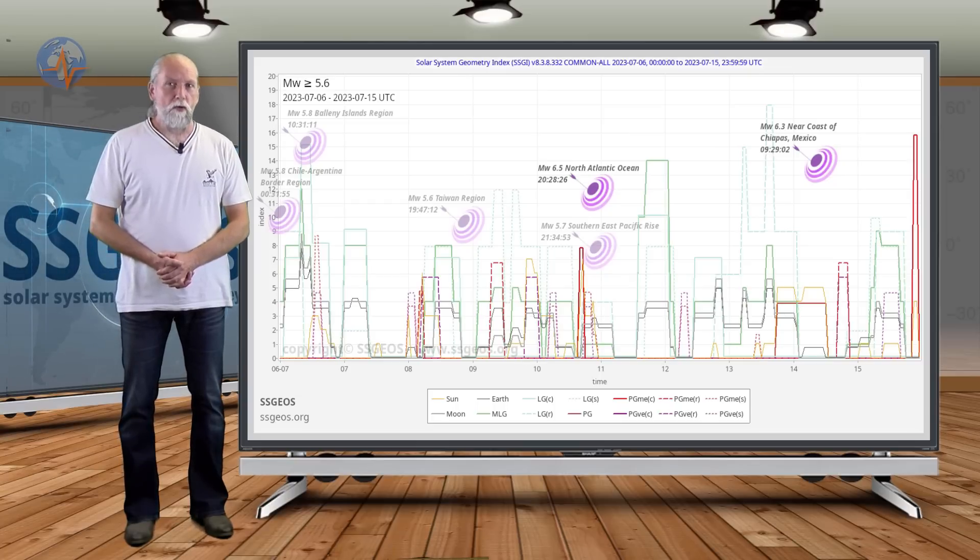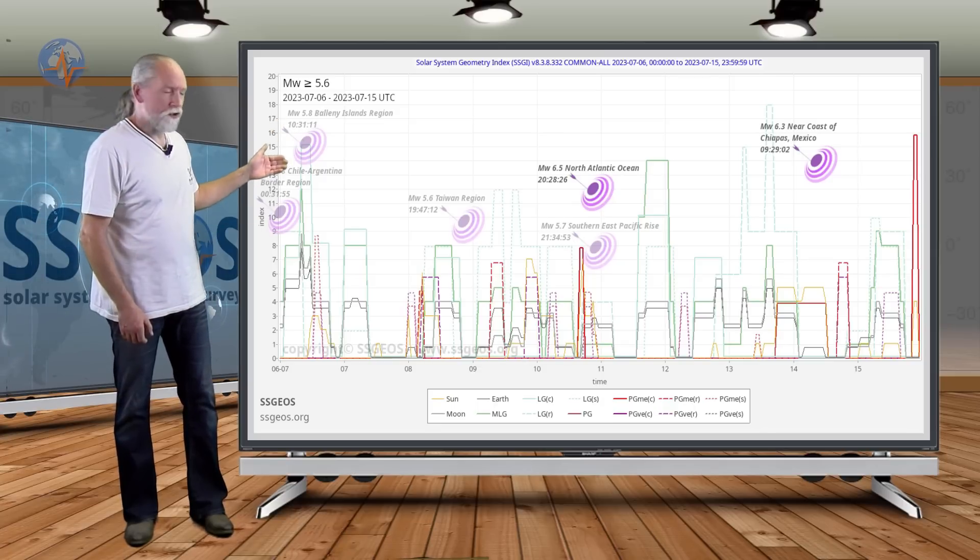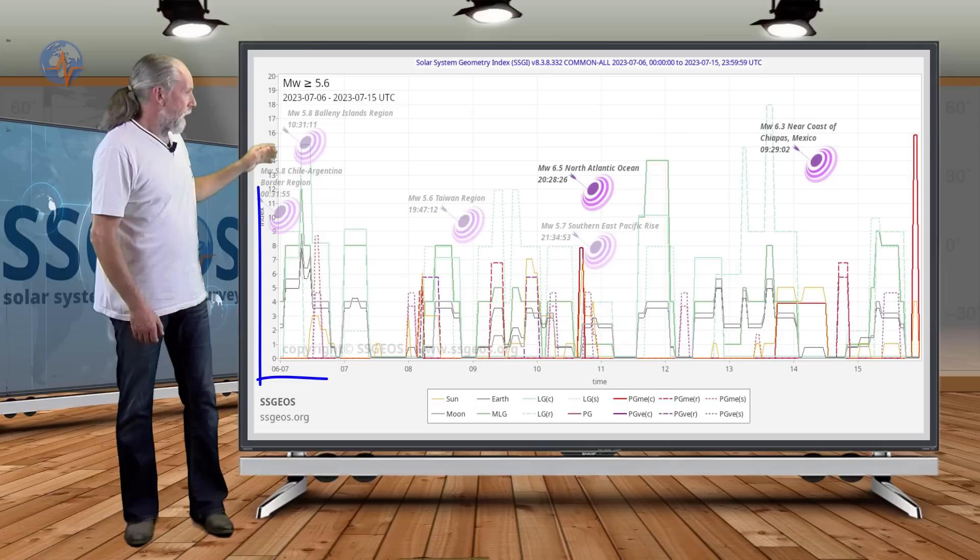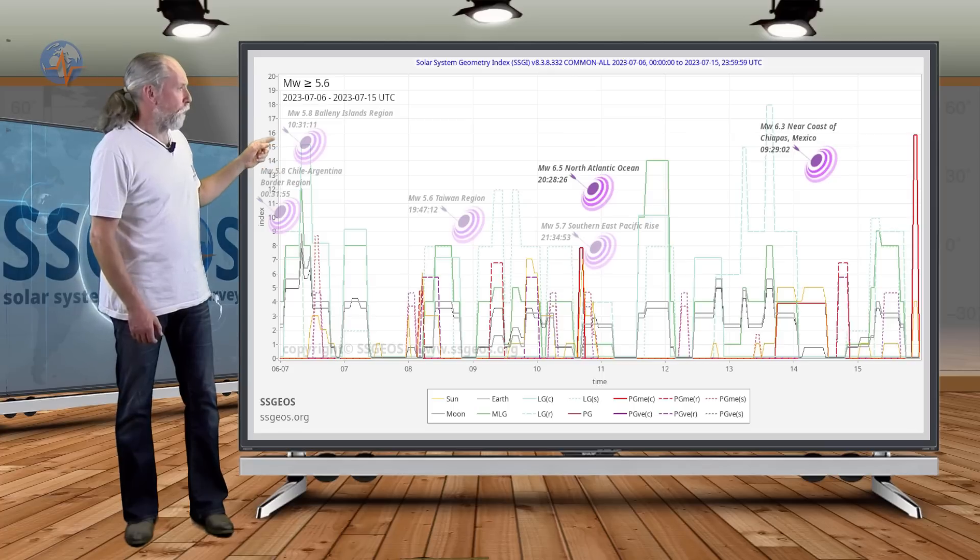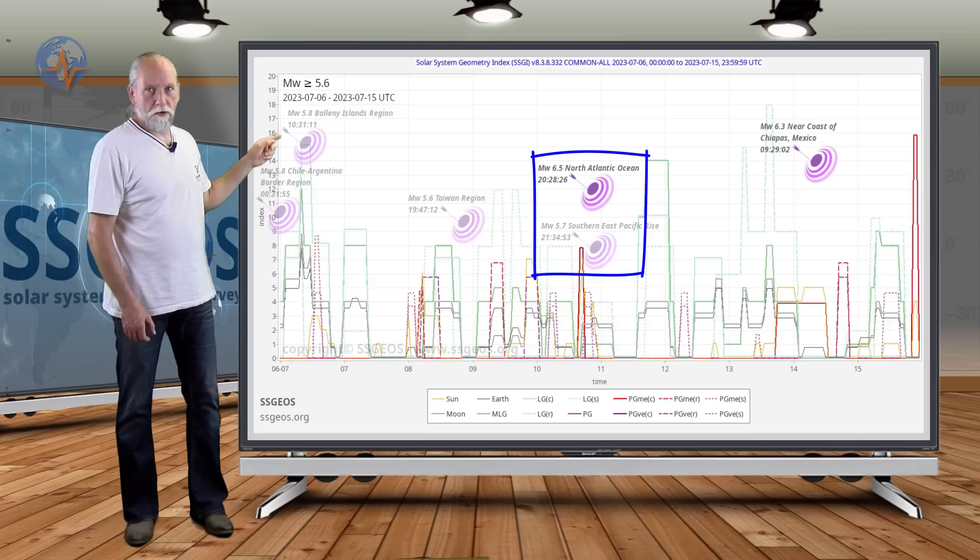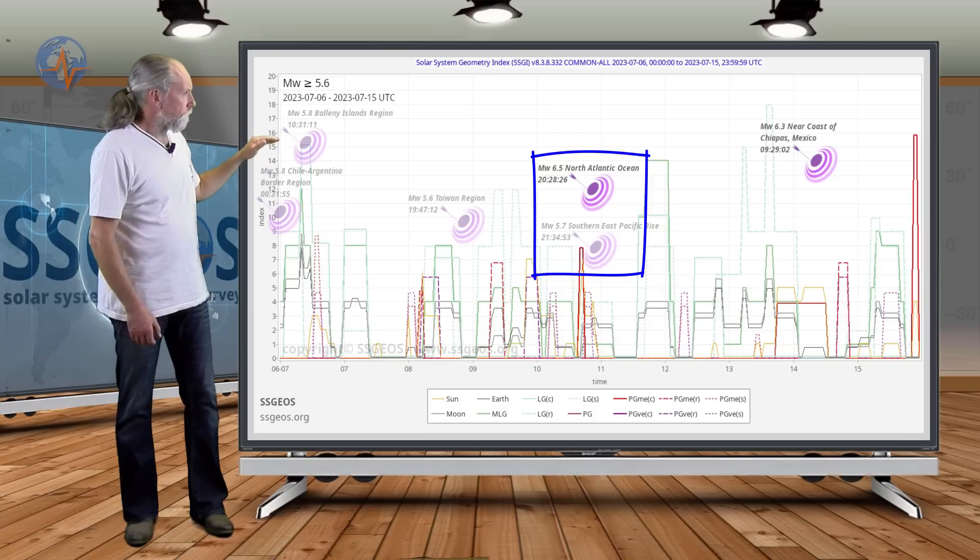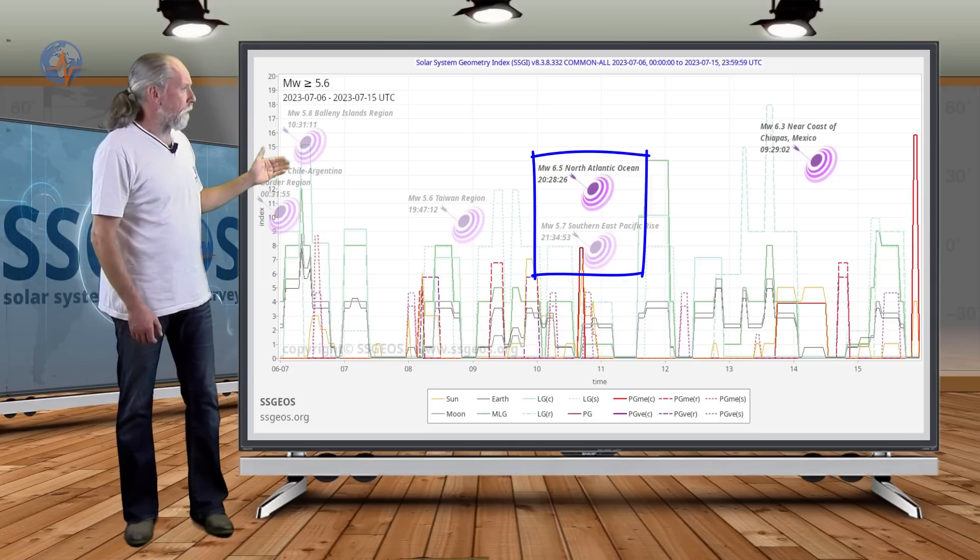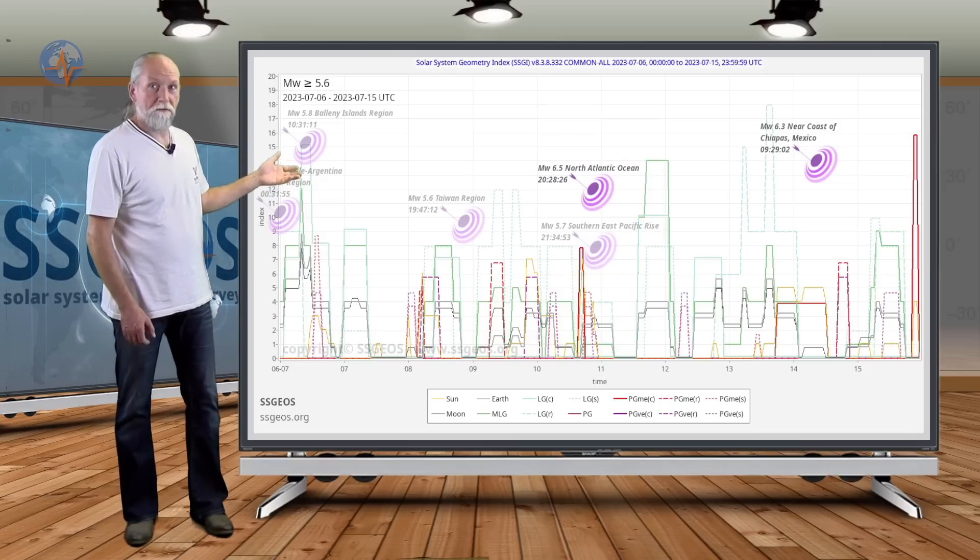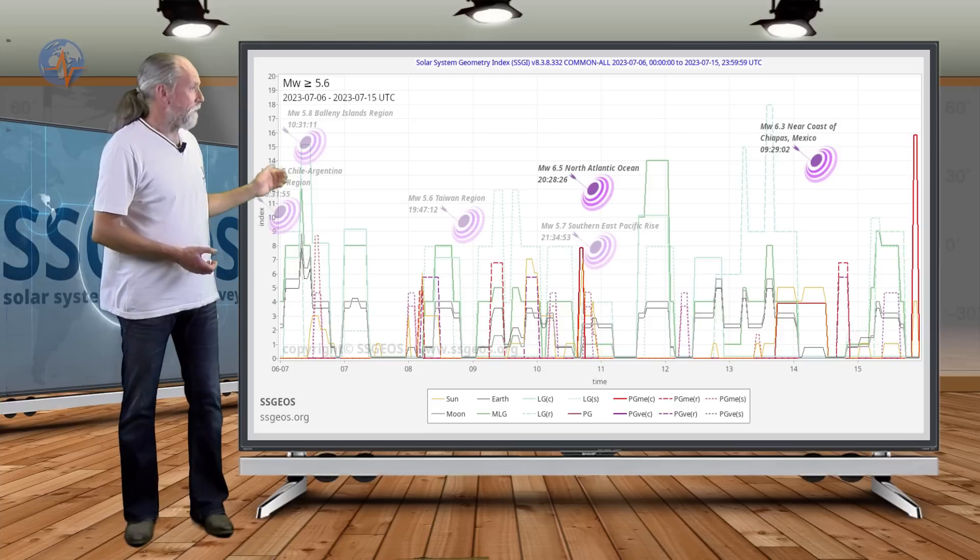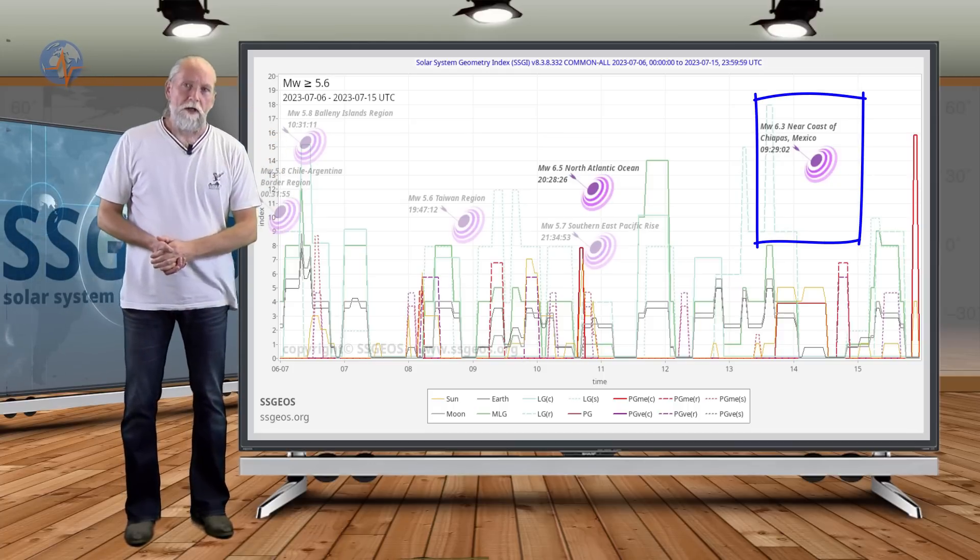We also didn't have planetary conjunctions very much. Then as you can see here on the SGI graph on the 6th we had a clustering of magnitude 5.8 earthquakes, and then on the 10th a 6.5 North Atlantic Ocean just outside the Caribbean plate, accompanied by magnitude 5.7 southern east pacific rise, also some more clustering there, some stronger seismic activity typically magnitude 5.6 and larger.